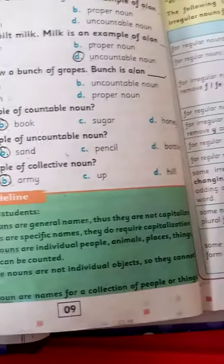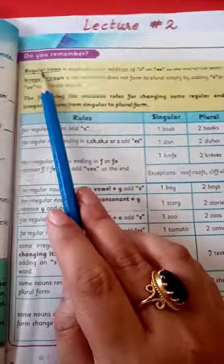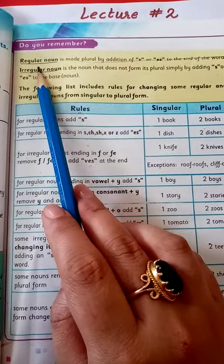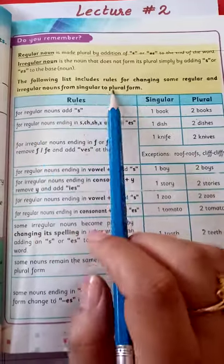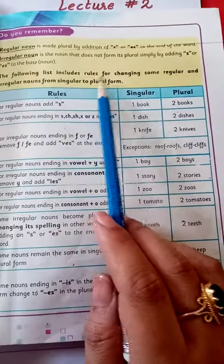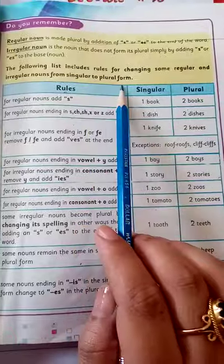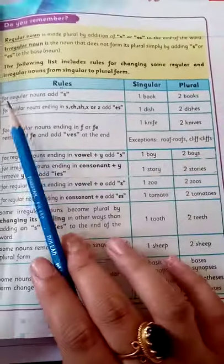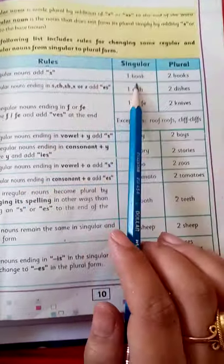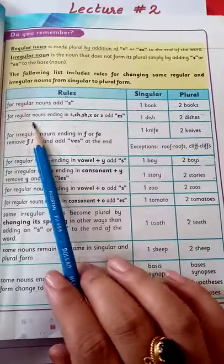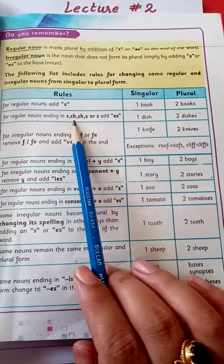Come to page 10. On page 10, I have given you the definition of regular noun and irregular noun. The following list includes rules for changing regular and irregular nouns from singular to plural. Rule one for regular nouns: add -s. For example, one book, two books.